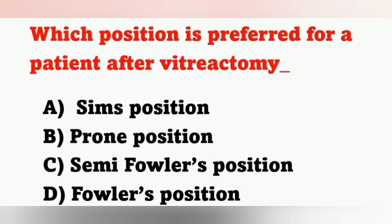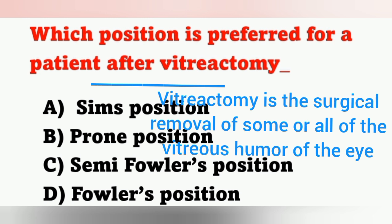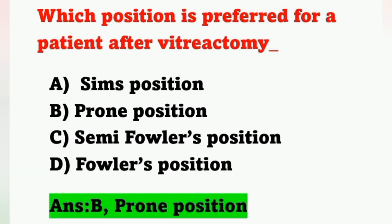Which position is preferred for a patient after vitrectomy? Option A: Sims position, option B: prone position, option C: semi-Fowler's position, option D: Fowler's position. Vitrectomy is the surgical removal of some or all of the vitreous humor of the eye. After vitrectomy, we give prone position — option B is correct. The patient should not sleep on their back as it could cause bubble movement in the macular hole.